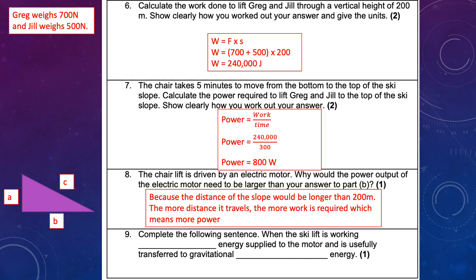Question 9: complete the sentence — when the ski lift is working, what type of energy is supplied to the motor? The answer is electrical energy, which is usefully transferred to gravitational potential energy.